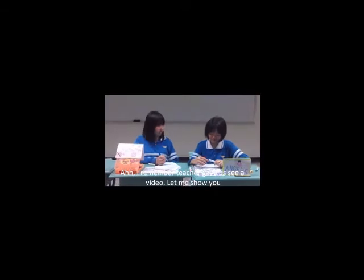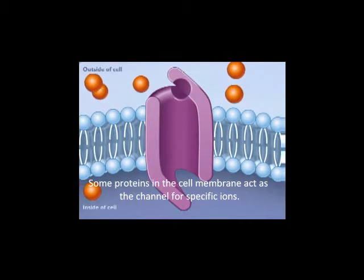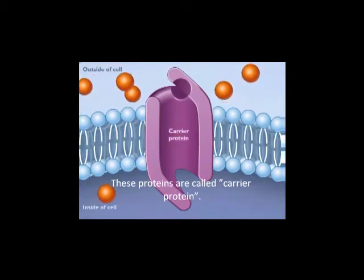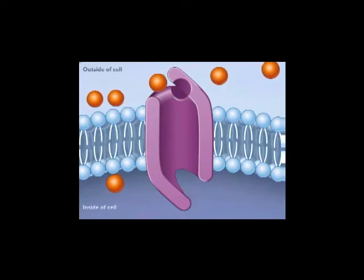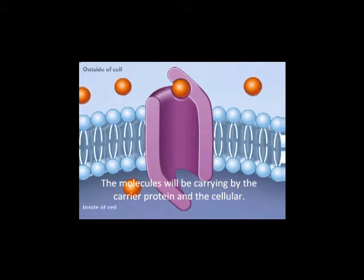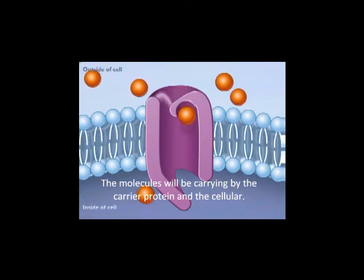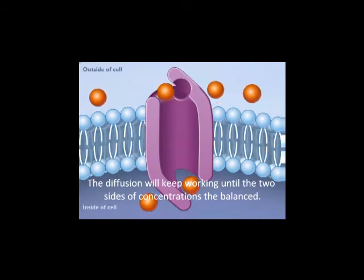I remember teacher gave us a video. Proteins in the cell's membrane act as a channel for specific ions. Proteins are called carrier proteins. These are ions that diffuse from high concentration to low concentration. Molecules will be carried by the carrier protein into the cell. Facilitated diffusion will keep working until the two sides of concentration are balanced.